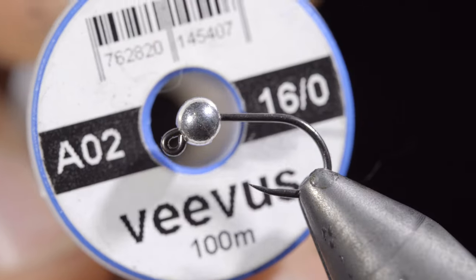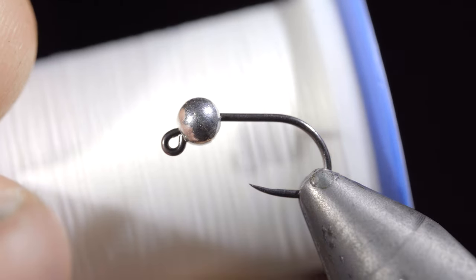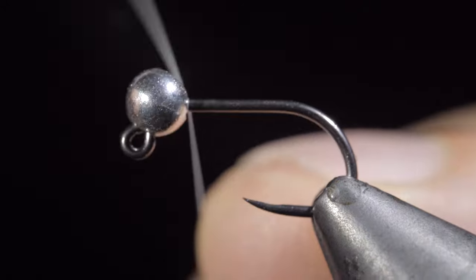We're going to be tying a rainbow warrior. We'll start off with some Vivas 60 knot in white. However, I recommend you use red.